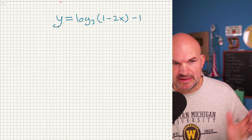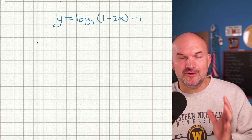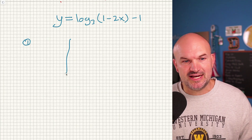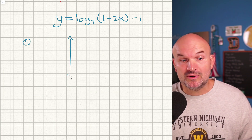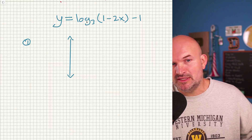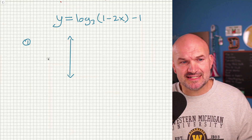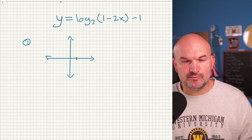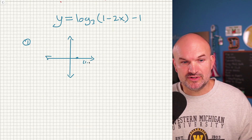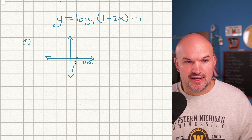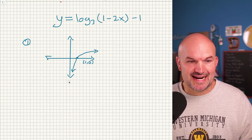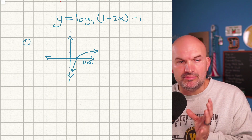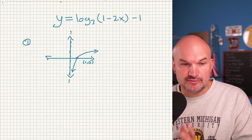Tip one: when you're graphing a logarithm, you need to know what the parent graph is and the important points. It doesn't matter what the base is — natural logarithm, log base 10 — they all have the exact same shape and important points. The x-intercept is at (1, 0), and there is a vertical asymptote at x = 0. Once we apply transformations, those will change.